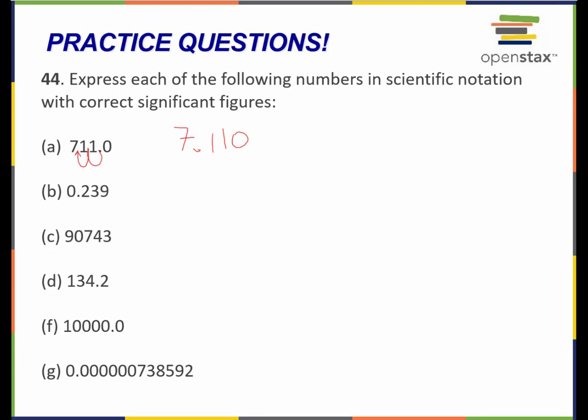So I have the first part of my scientific notation. I've moved the decimal in between the first two numbers. I have a number between 1 and 10 — it's 7.110. Now I have to apply a multiplication factor that corresponds to the distance by which I moved this decimal point. I moved it over 2 places to the left, so I'm going to multiply this times 10 to the positive 2. This is how I would represent this number in scientific notation.